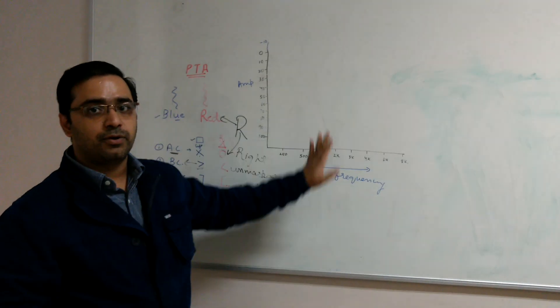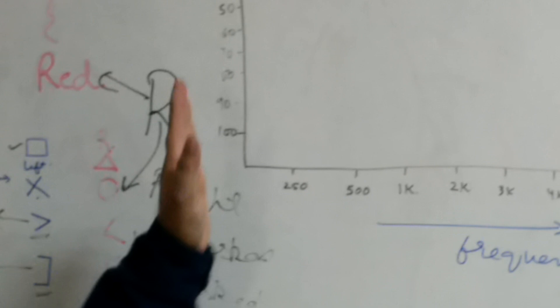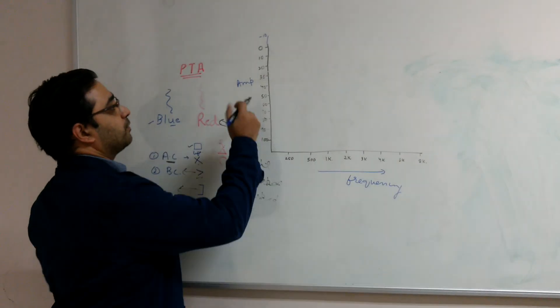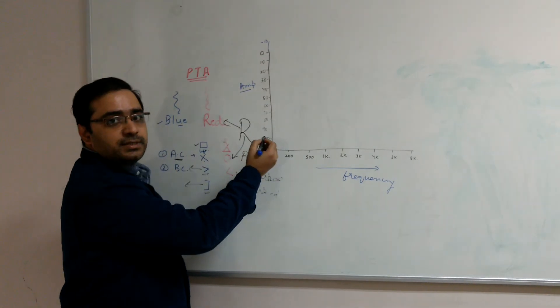Now we will go to an audiogram. In audiogram there are two axes, one is X axis, Y axis. Vertical axis, that is amplitude. So how many decibels is the hearing loss. Horizontal axis is frequency.